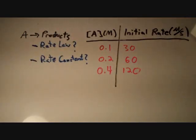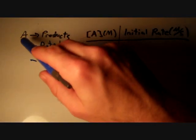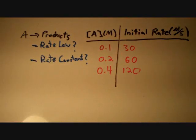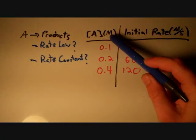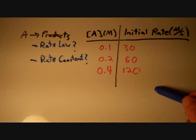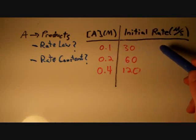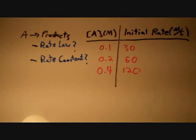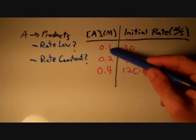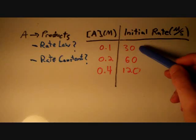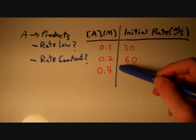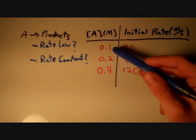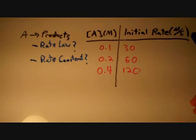Let's look at the following reaction: A, our single reactant, becomes products. We have a table of the concentration of A in molar (moles per liter), and the initial rate in molar per second (moles per liter times seconds). In the first experiment, the initial concentration was 0.1 molar and the initial rate was 30 molar per second. In the second row, the initial concentration is 0.2 molar and the initial rate is 60 molar per second, and so on.